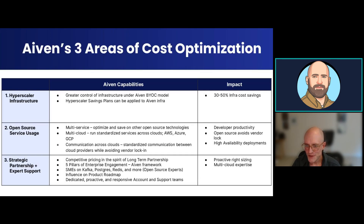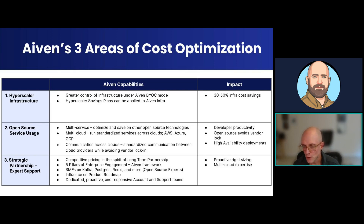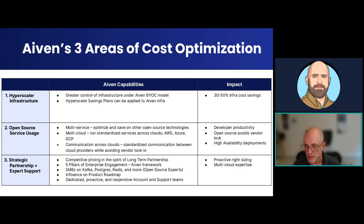Ivan's three areas of cost optimization: we're going to discuss more around these cost optimization topics during our forum session. BYOC is just one element in cost optimization. Obviously, we have covered having greater control of your infrastructure through our BYOC deployment model, as well as the hyperscaler savings plans that can be applied to the infrastructure Ivan is running on. We've seen anywhere from 30% to 50% cost savings — that's a rough estimate and a fairly wide range, dependent on the sizes of machines for your services and the type of data ingress and egress during peak load times.